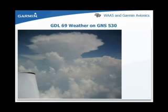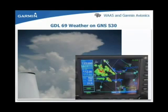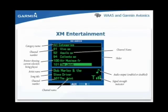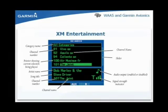Here is an example of how XM weather information is depicted on the WAAS GNS unit. Just off your left wing, you see weather activity. Confirm it with a NEXRAD image overlaid on your moving map page, and you can easily obtain local METAR information for that area. Audio entertainment is also available from XM satellite radio service when the GDL-69A is installed and the service is activated. The WAAS unit serves as both the display and controller for the XM radio.